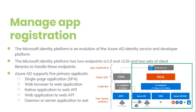Now let's look at managing app registration. Microsoft Identity Platform is an evolution of Azure AD identity service and developer platform. It allows developers to build applications that sign in with Microsoft identity and call Microsoft Graph, other Microsoft APIs, or APIs that developers have built. It is a full-featured platform consisting of authentication services, open-source libraries, application registration and configuration, full developer documentation, code samples, and other developer content. It supports industry standard protocols such as OAuth 2.0 and OpenID Connect.